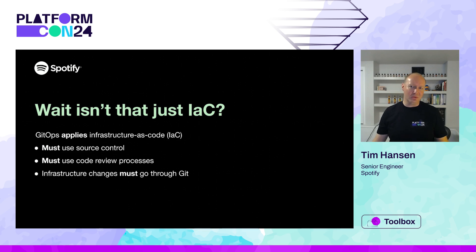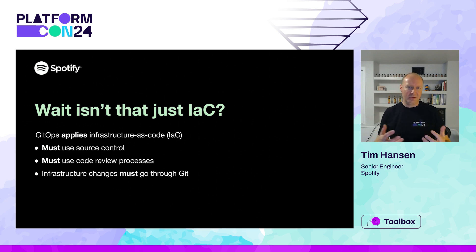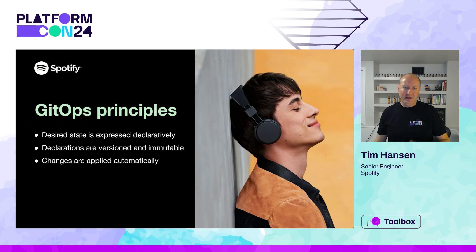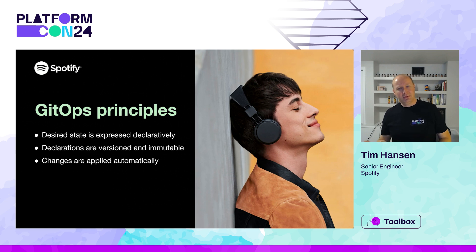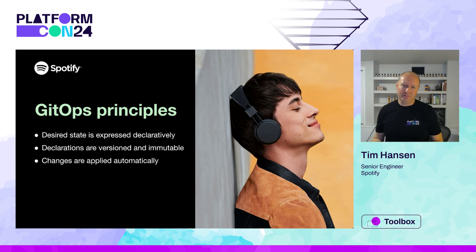With GitOps, you must use source control. You must use code review. You must make all changes through Git. And in addition to this prescriptive workflow, there are a few principles to follow. First, we must be able to express the desired state declaratively.